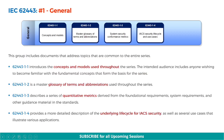The first section is the General section, that is 62443.1. This group includes documents that address topics common to the entire series. 62443.1.1 introduces the concepts and models used throughout the series. 62443.1.2 is a master glossary of terms and abbreviations. 62443.1.3 describes a series of quantitative metrics derived from the foundational requirements, system requirements, and other guidance material. 62443.1.4 provides a more detailed description of the underlying lifecycle for IACS security, as well as several use cases illustrating various applications.